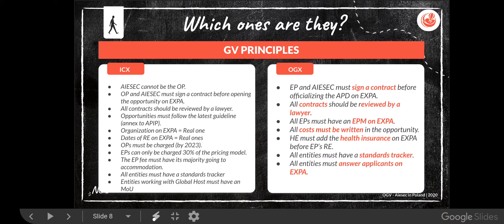The EP and AIESEC must sign a contract. All contracts have to be reviewed by a lawyer, but fortunately these contracts are reviewed by the lawyer before you have them on your hands — so it's done for you. All EPs must have an EPM on Expa. The EPM is the EP Manager, the person who has to help and guide the EP through the whole experience and make sure that it's good. The costs must be written in the opportunity and also in the contract. Health insurance is very important, and we always track standards using a standards tracking tool for each exchange participant to make sure each exchange standard is being fulfilled.